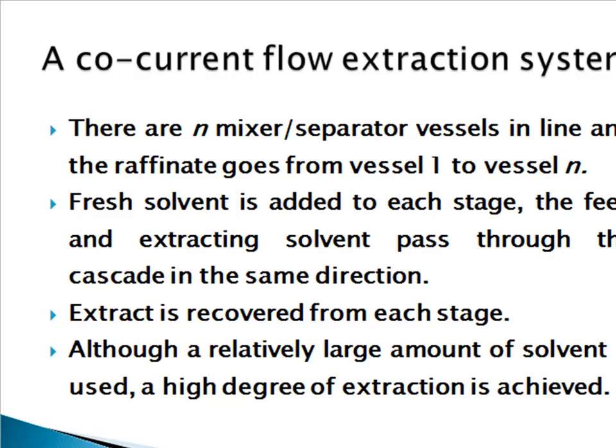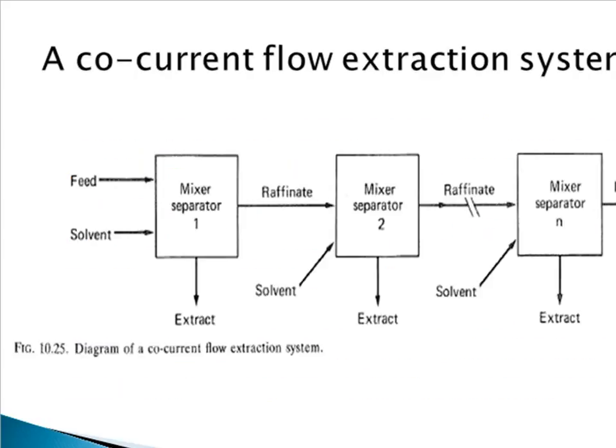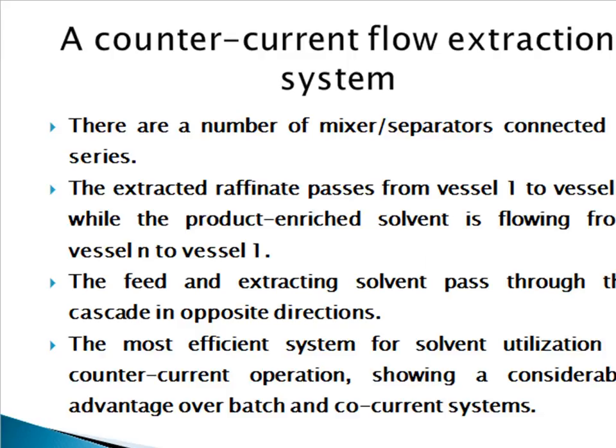In a co-current flow extraction system, there are N number of mixer or separator vessels in line, and the raffinate goes from vessel 1 to vessel N. Fresh solvent is added to each stage. The feed and extracting solvent pass through the cascade in the same direction. Extract is recovered from each stage. Although a relatively large amount of solvent is used, a high degree of extraction is achieved. This is the diagram of the co-current flow extraction system.